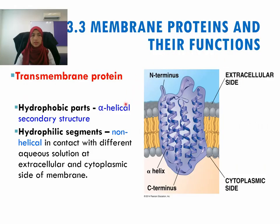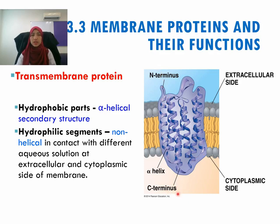This is an example of a transmembrane protein that penetrates the hydrophobic core of the membrane. It has 7 alpha helices in its secondary structure. This is an example of a bacterial transport protein called bacteriorhodopsin. The alpha helical secondary structure forms the hydrophobic part, and the N-terminus and C-terminus are non-helical structures in contact with the solution at the extracellular side and at the cytoplasmic side of the membrane.